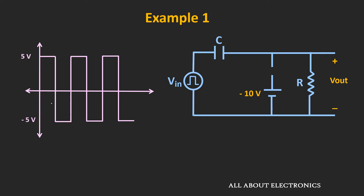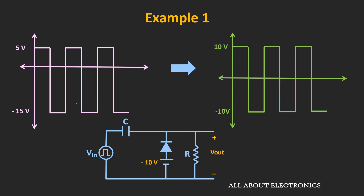Due to that, this diode will act as an open circuit, and the output voltage will follow the input voltage. So if this is the input waveform, the output waveform will be the same as the input waveform. Due to that, this circuit will not work as a clamper circuit. But in the given example, as the diode is conducting for some duration, we can apply the shortcut method.